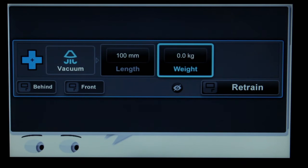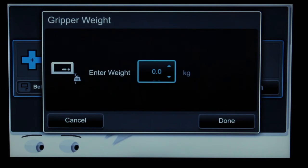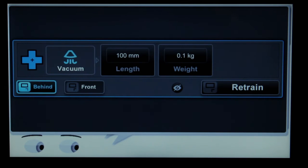Then, enter the weight of the vacuum gripper. 0.1 kilograms for one vacuum cup without extensions. Press done and then select train or retrain.